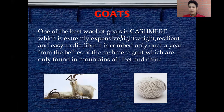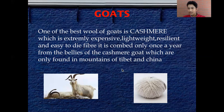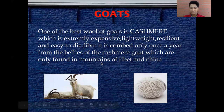One of the best wools from goats is known as cashmere, which is extremely expensive, lightweight, resilient, and easy to dye. It is combed only once a year, and only from the bellies of the cashmere goat — no other parts. Cashmere goats are only found in the mountains of Tibet and China.